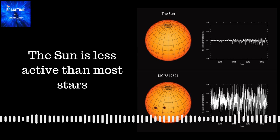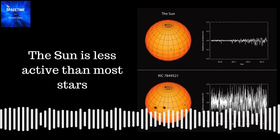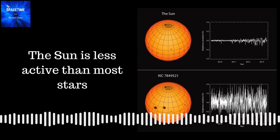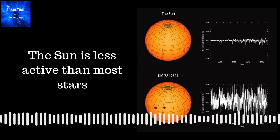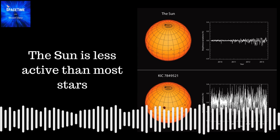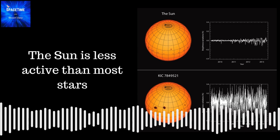In some cases, those brightness fluctuations were caused by orbiting planets transiting in front of their host star. For this solar brightness study, the authors selected those stars that complete a full rotation every 20 to 30 days. That's similar to our Sun.